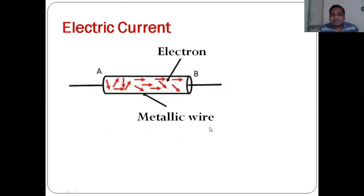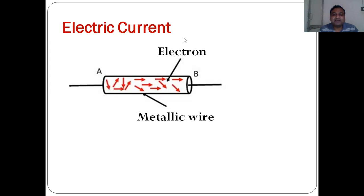Now let us try to understand electric current. Here you can see a metallic wire has been shown, and electrons are moving here and there. First of all, let me clarify that electric current is a flow of electrons. You have already learned that metals are good conductors of electricity while non-metals are insulators. The reason electric current flows through metal is the free electrons inside it.